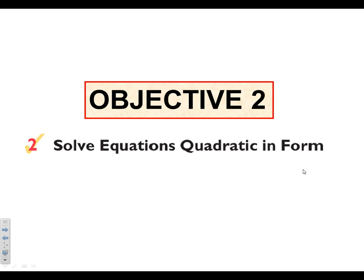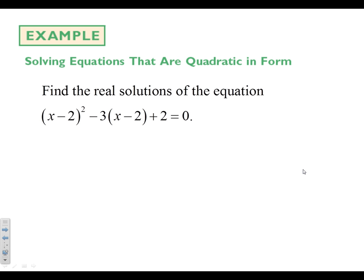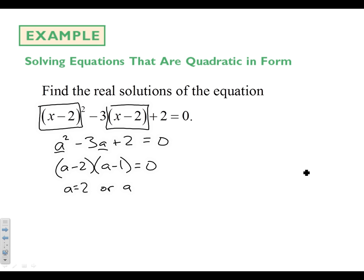Second objective. We're going to solve equations that are quadratic in form. First one, we're going to take a look at an a squared minus 3a plus 2 problem. And so on this problem, this should look familiar except for the x minus 2s are a little more complicated than we're used to looking at. So instead of dealing with the x minus 2s, we're going to just substitute and use a's until we can get solutions. Let's factor this. What multiplies to 2 and adds to negative 3? Negative 2 and negative 1.